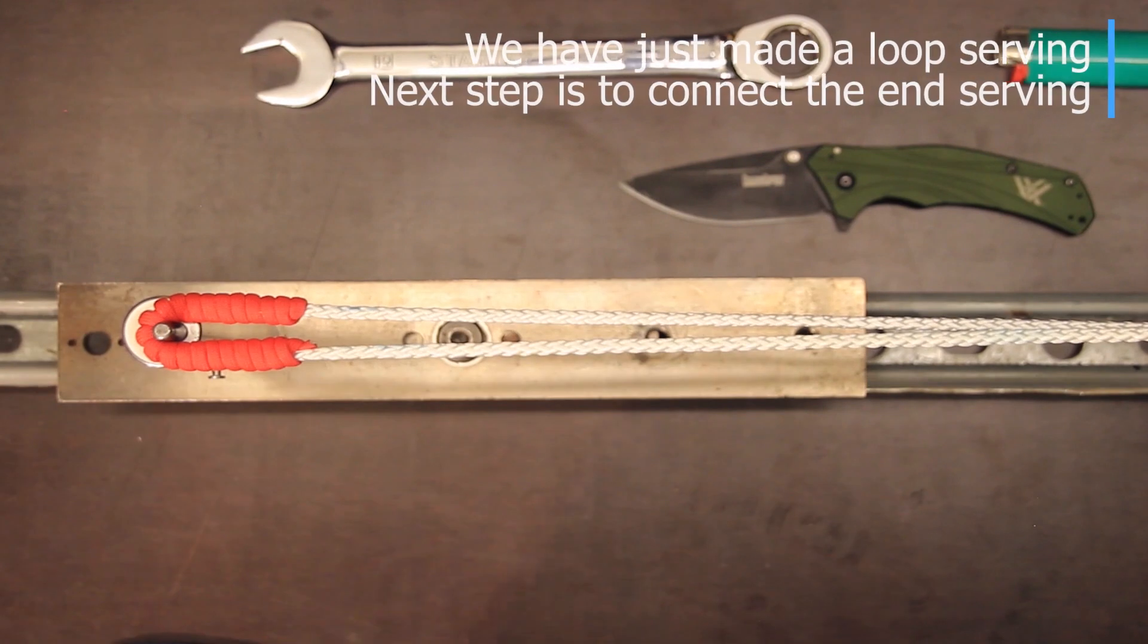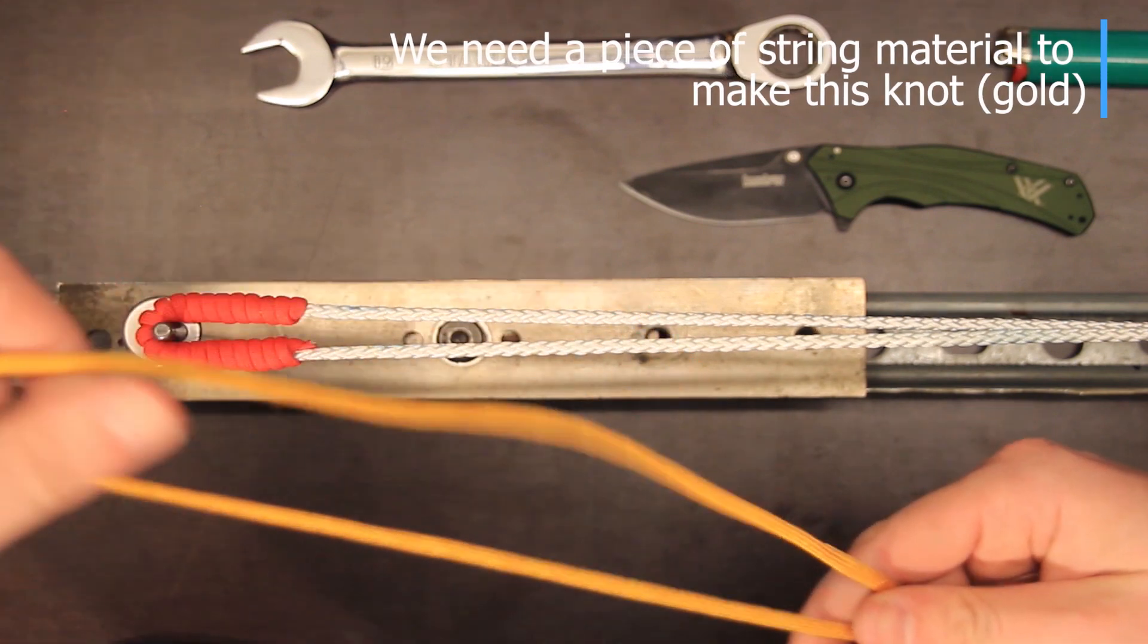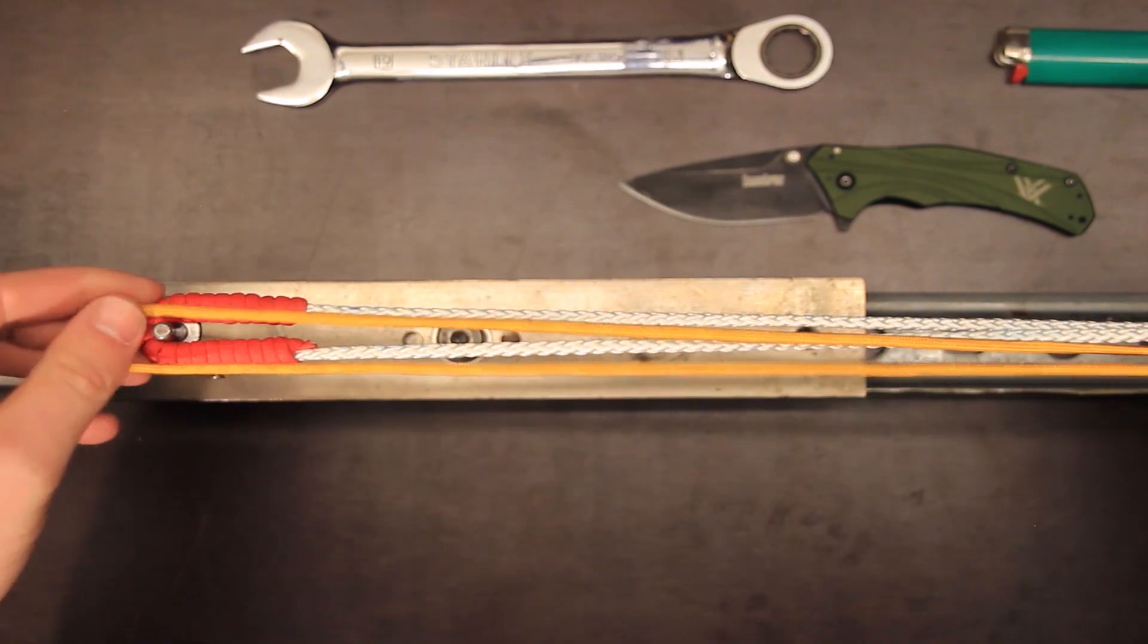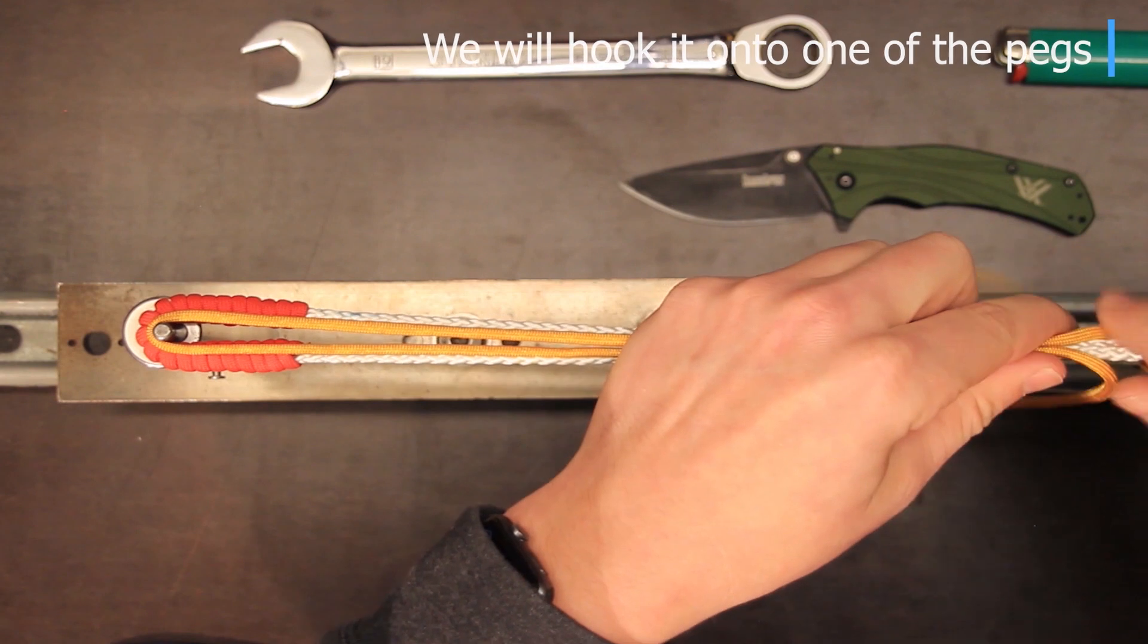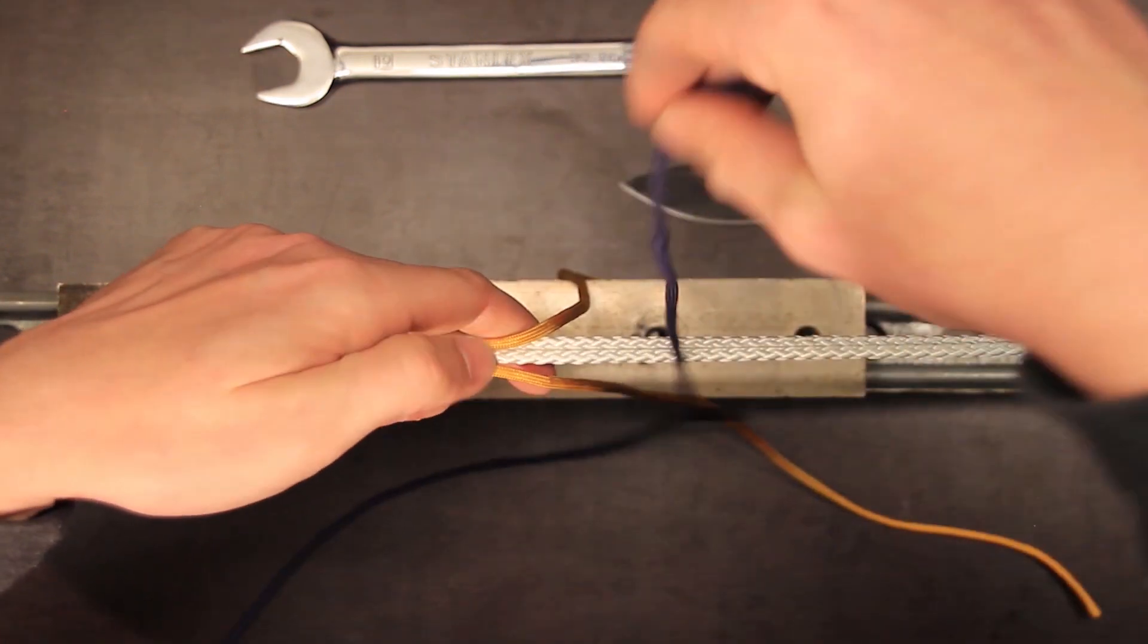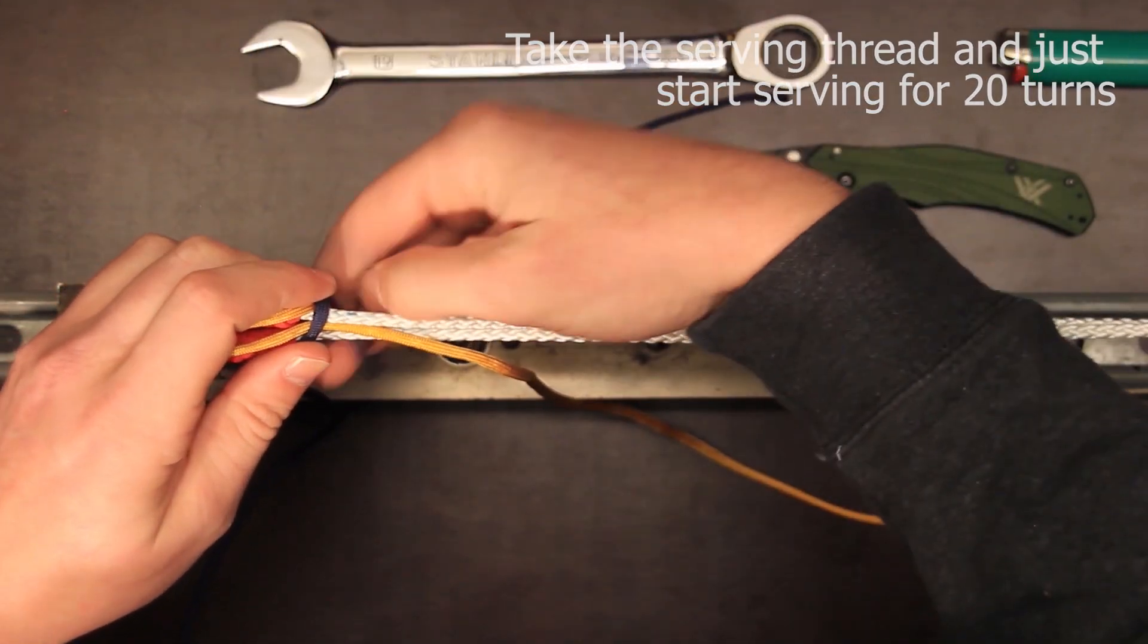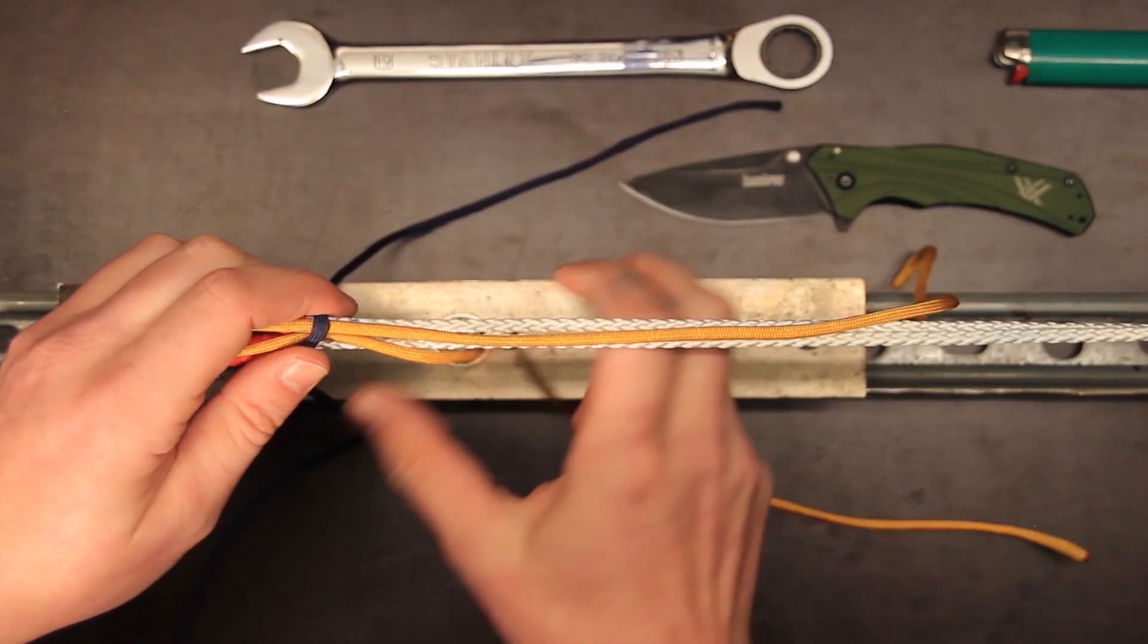The second knot I'm going to show you is the end serving so we're going to connect the end loop with this end and this gold piece of paracord will represent string material and when normally put on the string this will stick because of the wax and now it doesn't and I have to play a little to get the paracord in place.